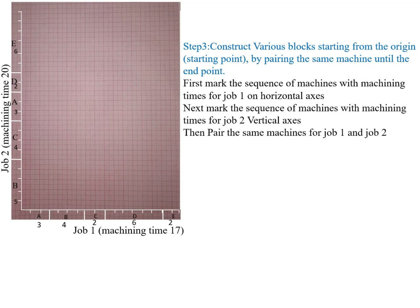Step 3 is to construct the various blocks starting from the origin, pairing the same machines until the end. First, we mark the sequence of machines with machining times on the horizontal axis for Job 1, and also mark the sequence of machines with machining times for Job 2.